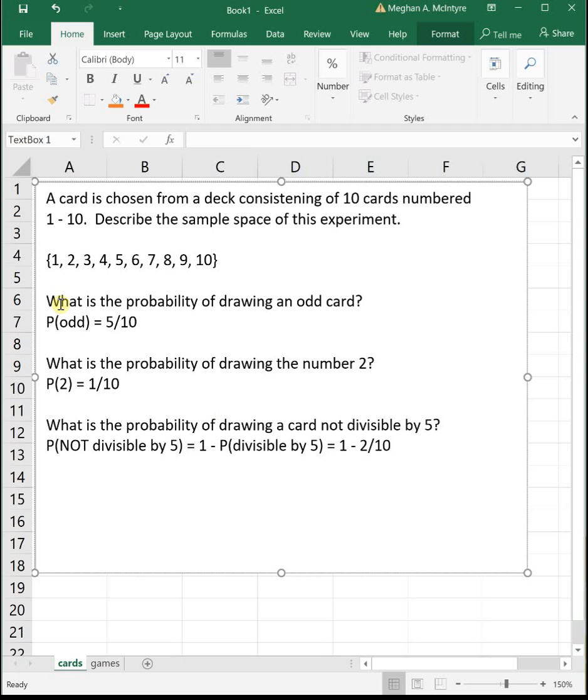And we could have done this directly. We could have counted up all the numbers that are not divisible by 5, but sometimes it's a little bit easier to use the complement rule. And again, you can leave everything as unreduced fractions just like I've got it on here.